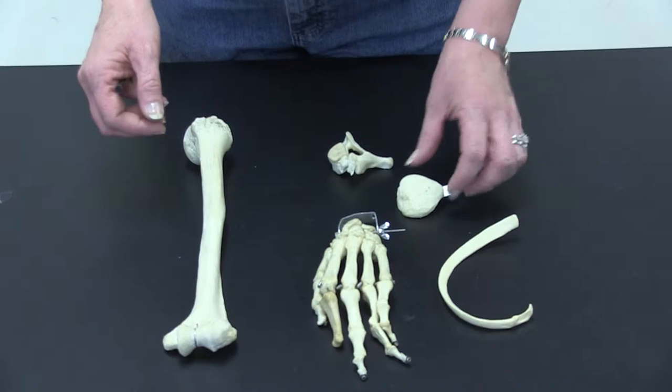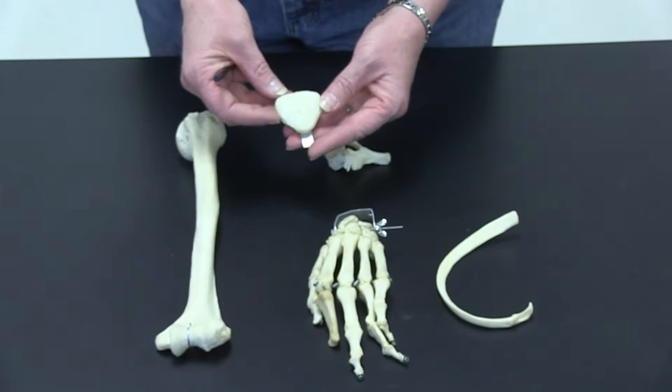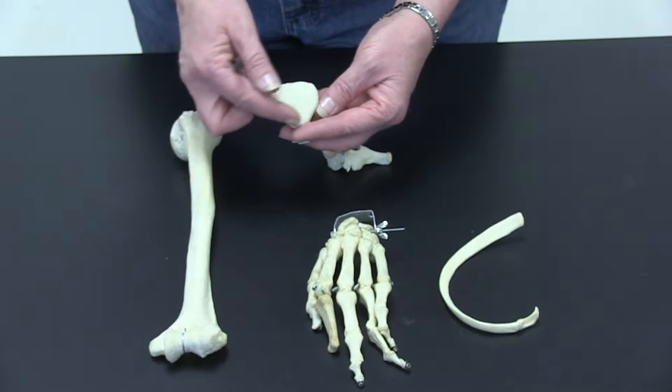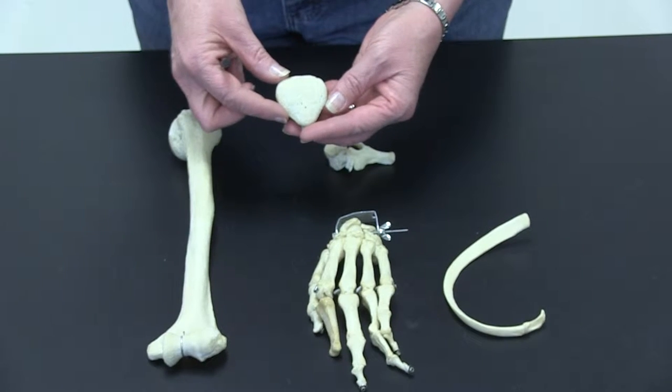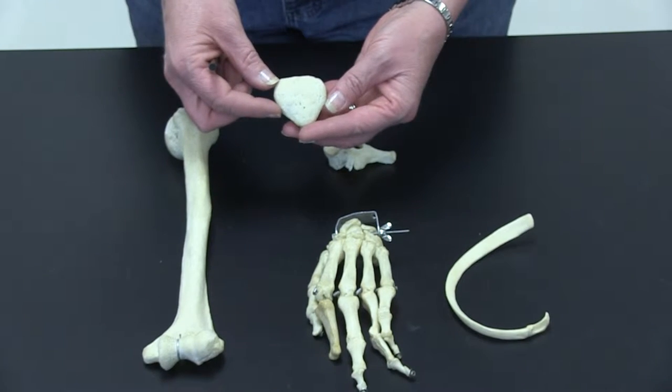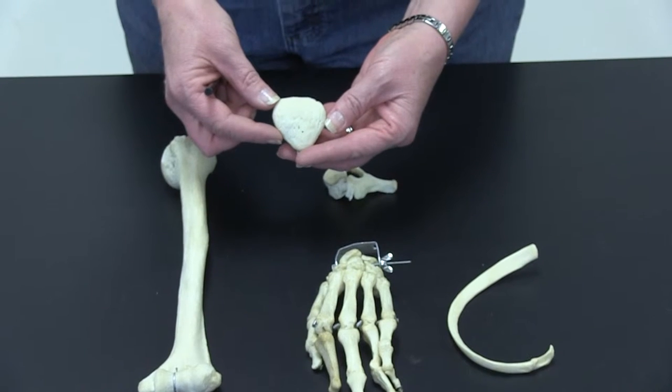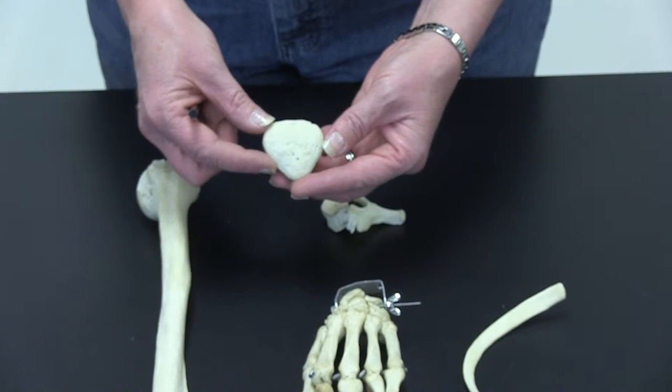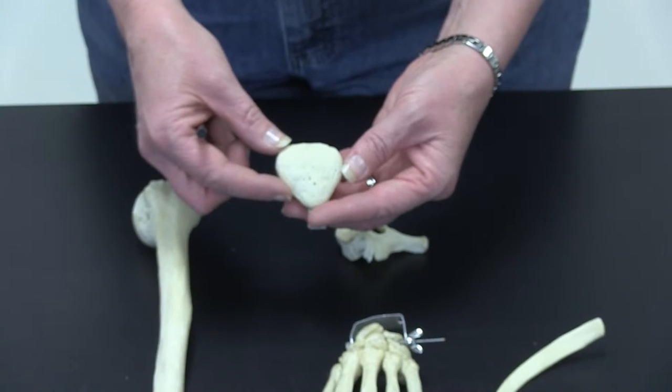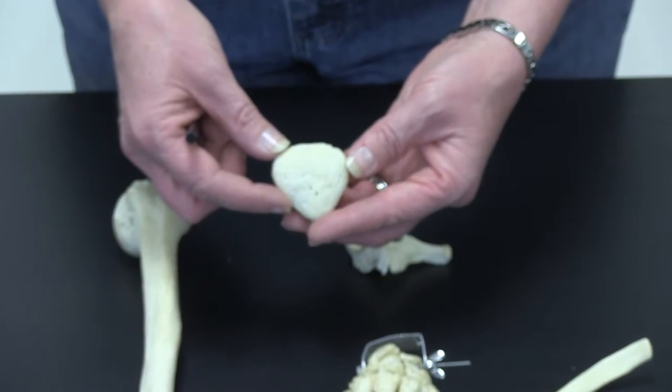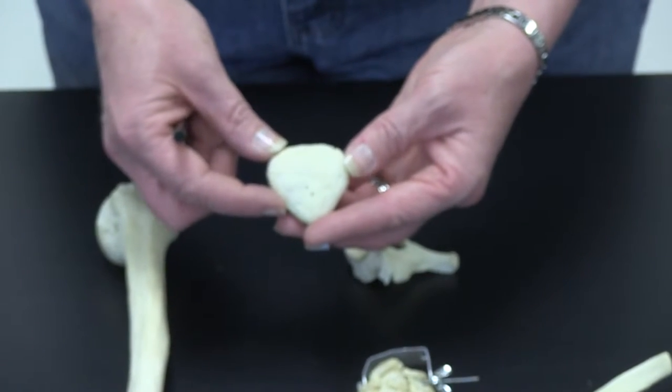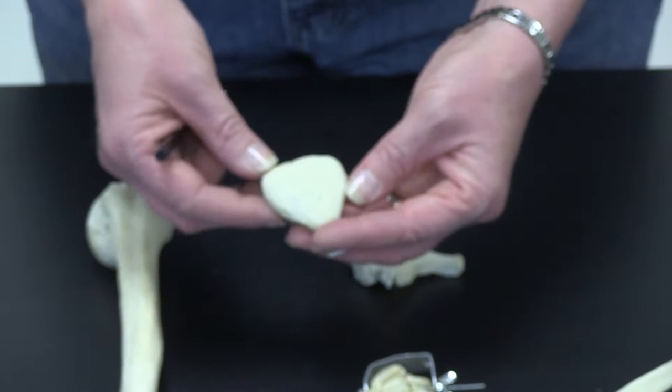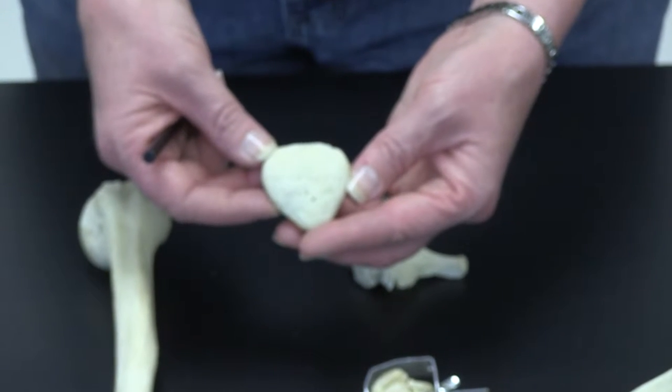And then we also have what we call a round bone, and the round bones are also called sesamoid. They are typically found inside of a tendon. So this would be the patellar bone, and it is found inside the quadriceps tendon, if you know your quadriceps are your muscles of your upper leg. So this is going to be a round bone or a sesamoid bone.